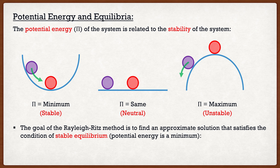We say that the goal of the Rayleigh-Ritz method is to find an approximate solution that satisfies the condition of stable equilibrium — in other words, that the potential energy is a minimum. This makes sense: if we're designing a structure and we were to move it a little bit, we don't want it to become unstable and buckle. We want a nice stable solution, because that typically guarantees safety. So this is why we want to minimize that potential energy — it guarantees us a stable equilibrium.